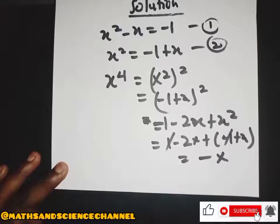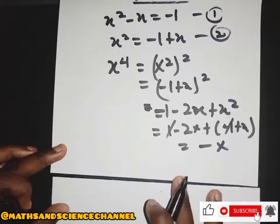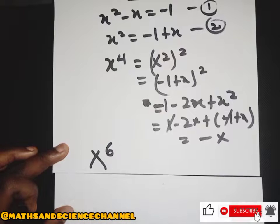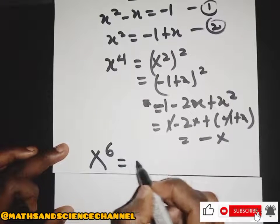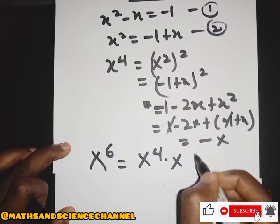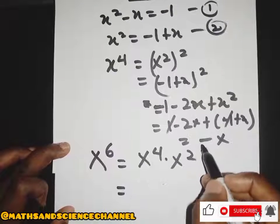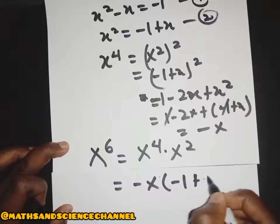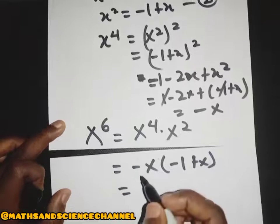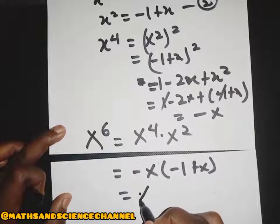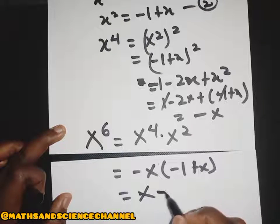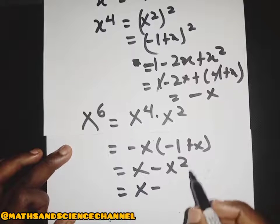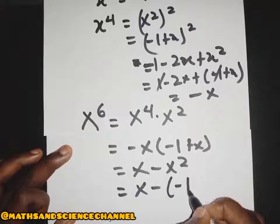Now that s to the power of 4 equals negative x, we can find s to the power of 6. s to the power of 6 is just s to the power of 4 multiplied by s to the power of 2. So we have s to the power of 4 as negative x, and then s to the power of 2 as negative 1 plus x.